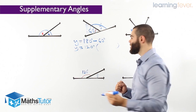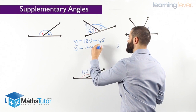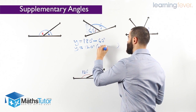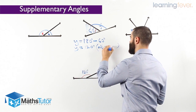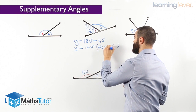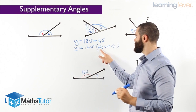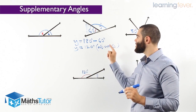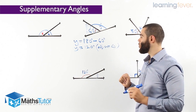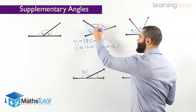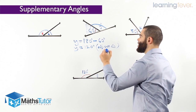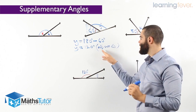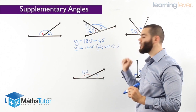We always write our reason. Our reason is adjacent supplementary angles. That's our reason for working out y — 180 degrees in total, take away the 60, and we are left with y which is 120 degrees. Adjacent supplementary angles.